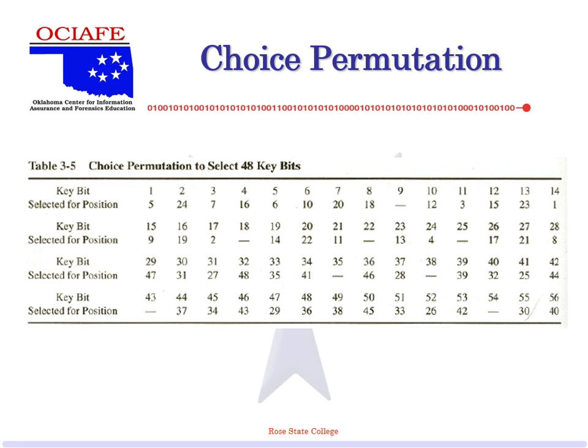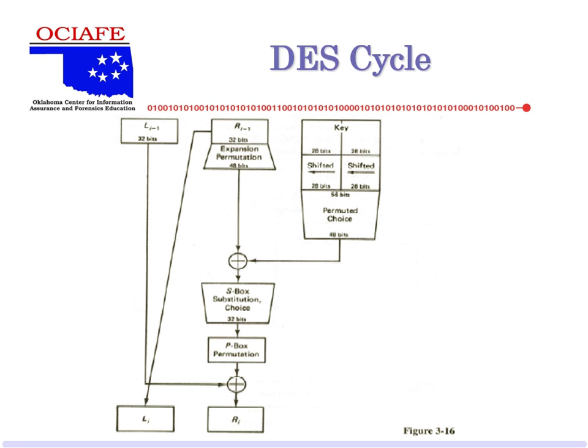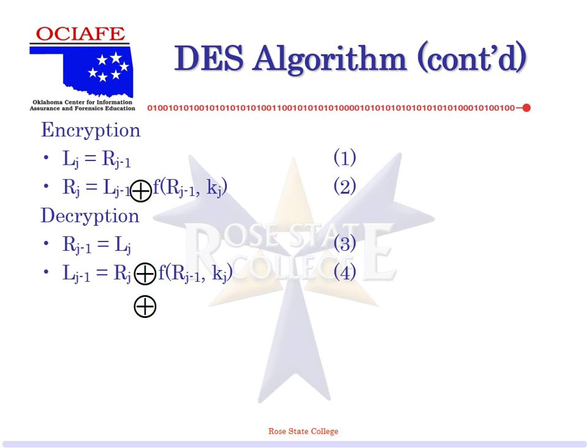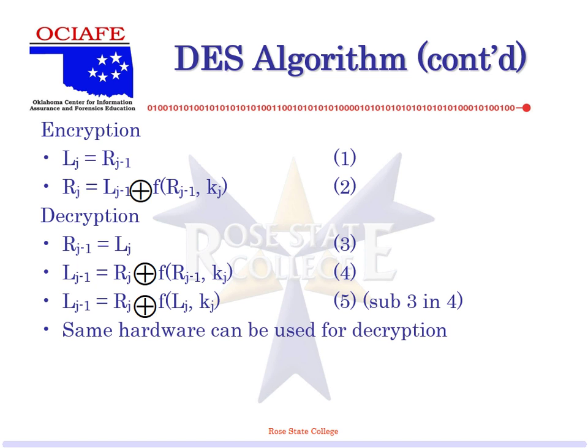There's the permuted choice box — again, you don't need to do this for the assignment, but I'm assuming there was a reason they did this. So we know our cycle. How many cycles? 16. How big is the block? 64. Left side is 32 — we do nothing to it, that becomes the next right side. The same hardware can be used for both encryption and decryption, which makes it nice. Keys are submitted in reverse order for decryption.